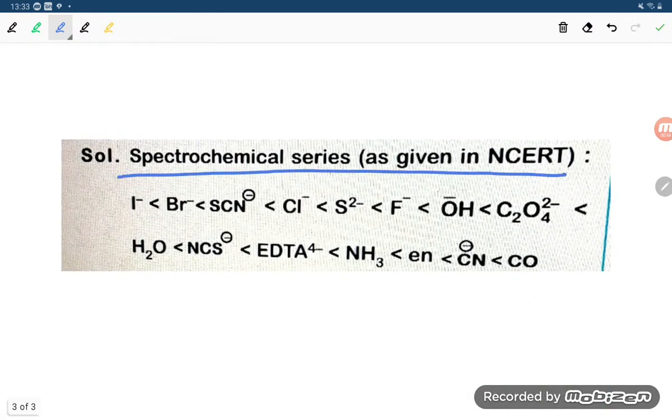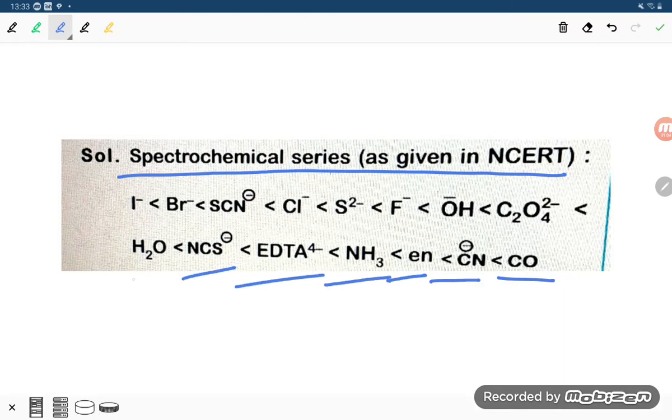If you see the spectrochemical series as given in the NCERT book, carbon monoxide is there, then cyanide ion, then en (ethylenediamine), ammonia, EDTA⁴⁻, NCS⁻, and then H₂O. So our question is this, and then oxalate ion is there.